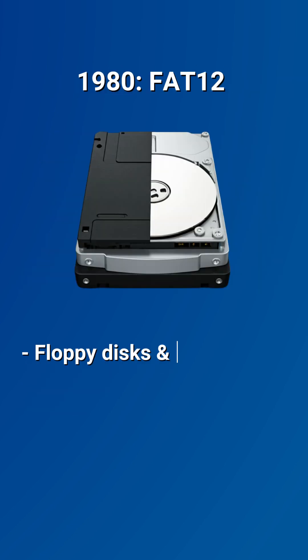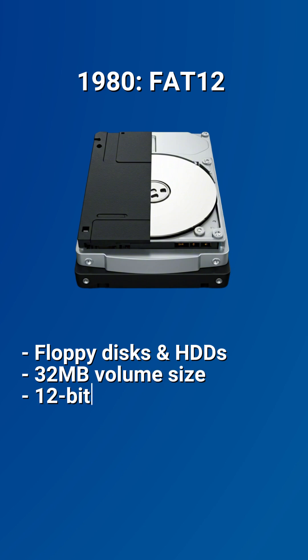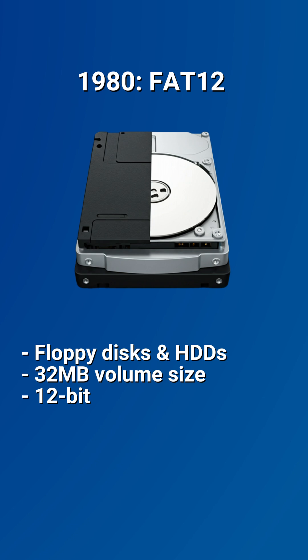Our story begins with FAT12, implemented in 1980. It was revolutionary for its time, intended for floppy disks, managing storage of up to 32 megabytes. Despite its limited capacity, it laid the groundwork for future iterations.